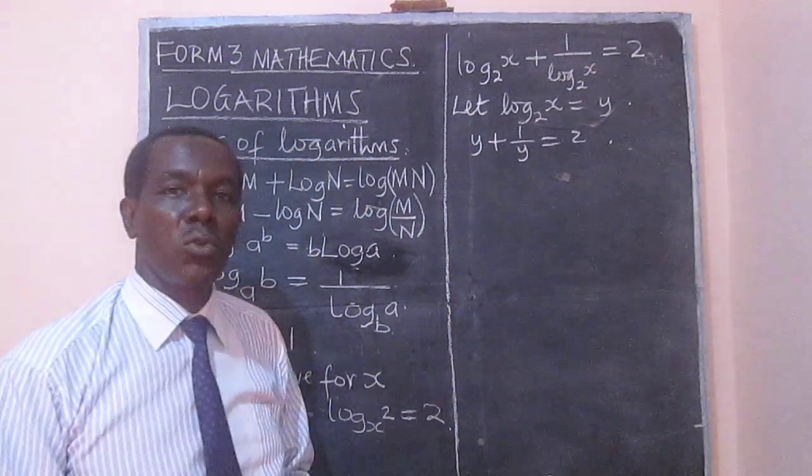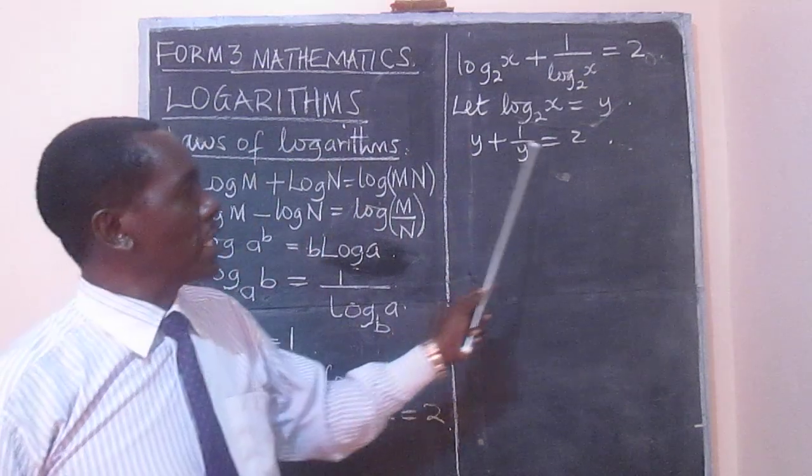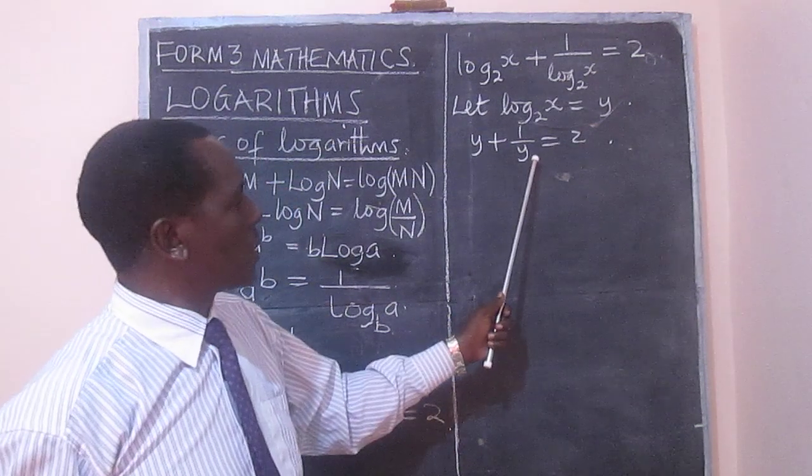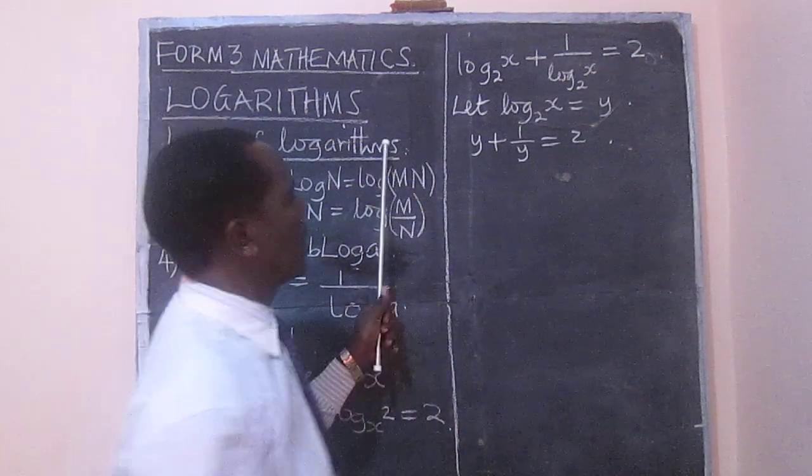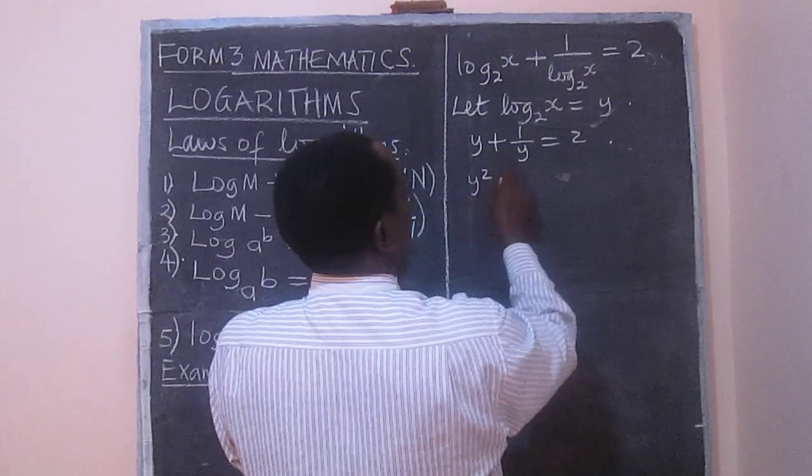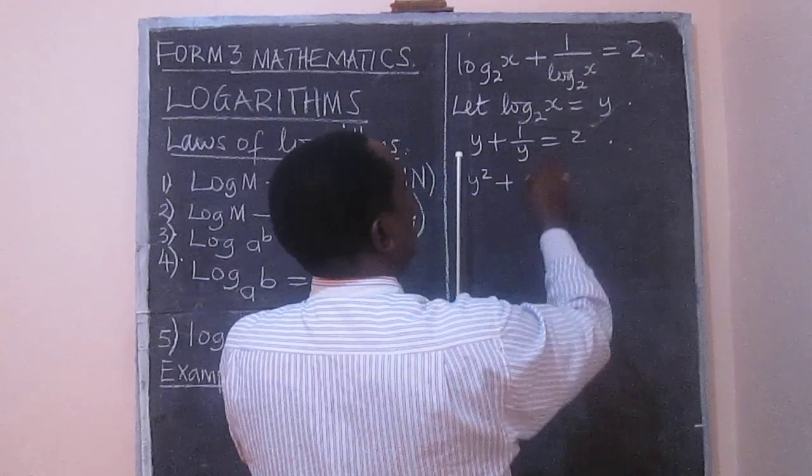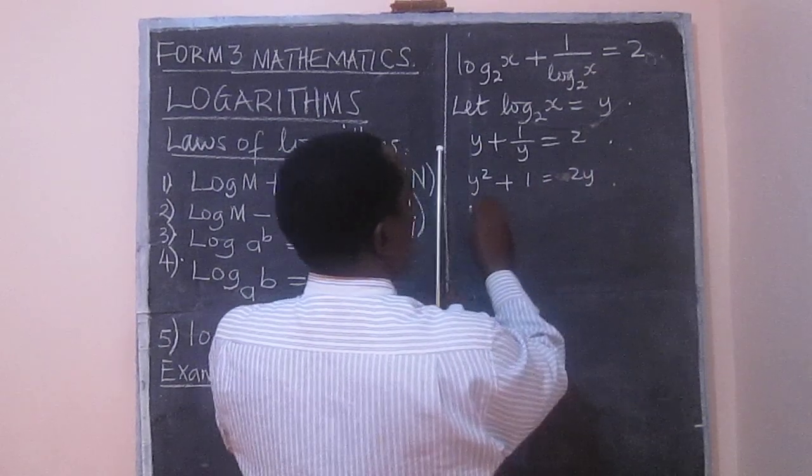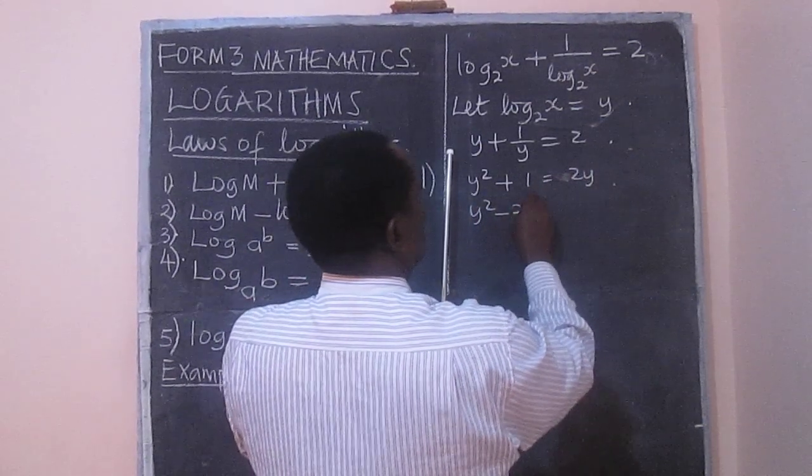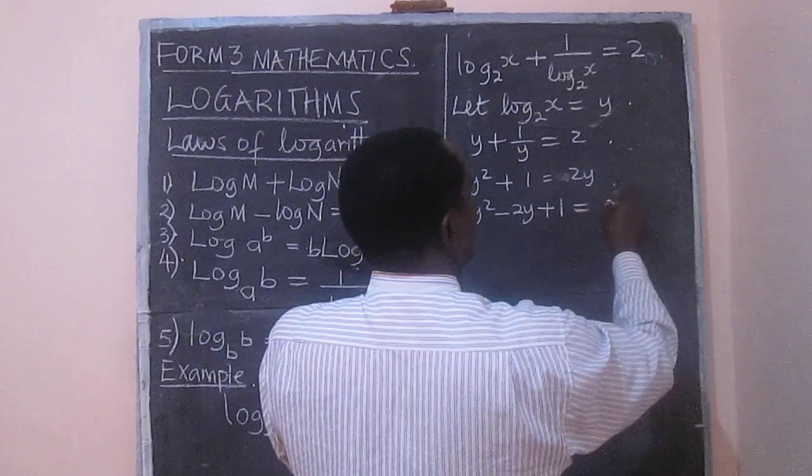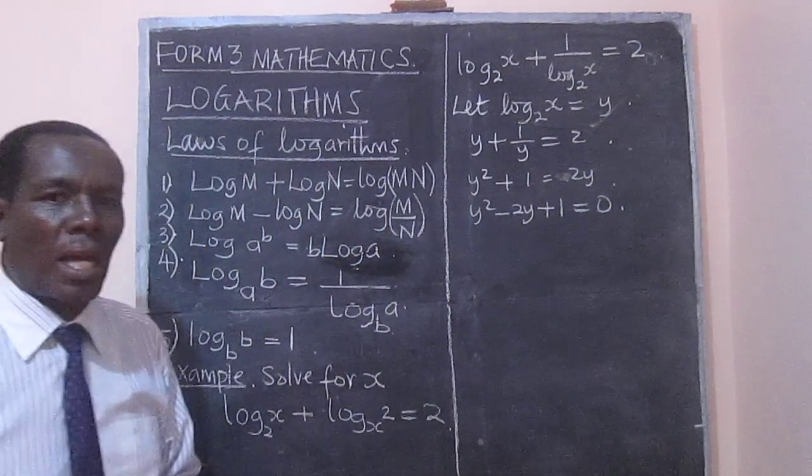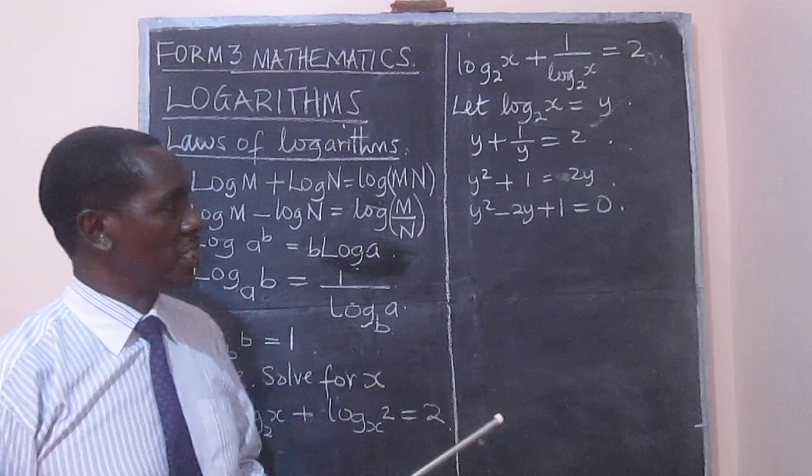And this looks like it's going to lead us to a quadratic equation. Because we can multiply throughout by y, and that gives us y squared plus 1 equal to 2y. In other words, y squared minus 2y plus 1 equal to 0. And so we've ended up with a quadratic equation.